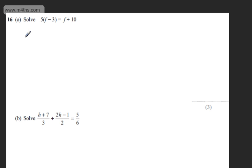I'm going to start on the left hand side by expanding the brackets. So we're expanding the brackets to give 5f minus 15 and then on the right we'll have f plus 10.